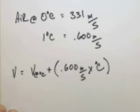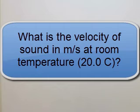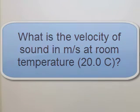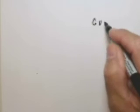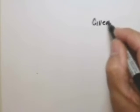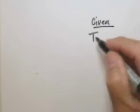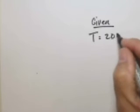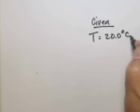So let's look at a problem. What is the velocity of sound in meters per second at room temperature, which is defined as 20 degrees Celsius? In this case, our given includes the temperature, 20 degrees Celsius.